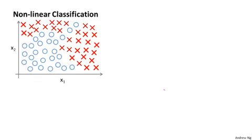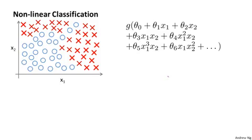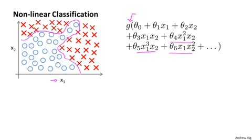Consider a supervised learning classification problem where you have a training set like this. If you want to apply logistic regression to this problem, one thing you could do is apply logistic regression with a lot of nonlinear features. Here, g as usual is a sigmoid function and we can include lots of polynomial terms like these. If you include enough polynomial terms, maybe you can get a hypothesis that separates the positive and negative examples. This particular method works well when you have only two features, x1 and x2, because you can then include all those polynomial terms.